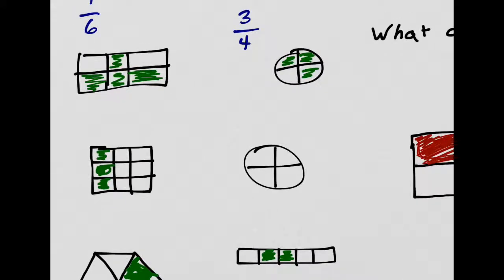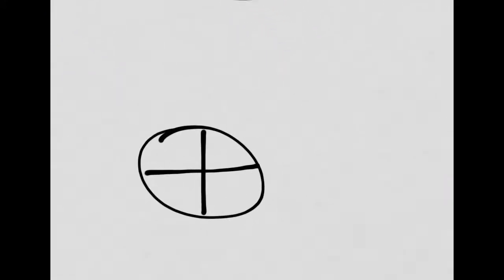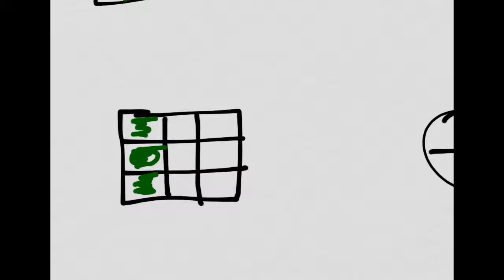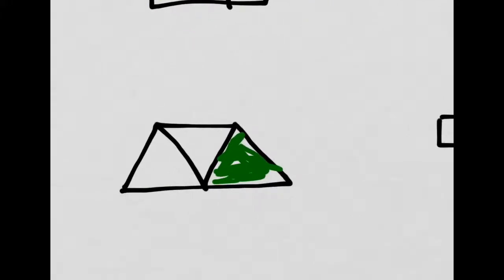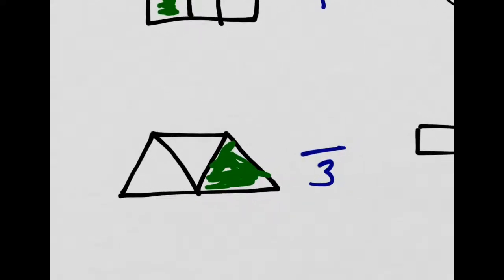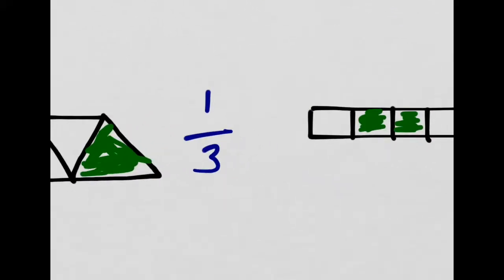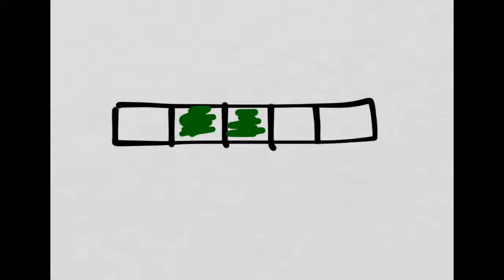Let's slide down to this next one. This one's a funny one — none of the parts are shaded. It is divided into four parts, but none of them are shaded, so we call this zero-fourths. Here's another one with nine parts — so it's ninths, and three of the ninths are shaded. Here's another funny one: it's a trapezoid with little triangles in it. They're all the same size, so it's still a fraction — it's thirds, and one-third is shaded. The last one has five parts, so it's fifths, and two of them are shaded.